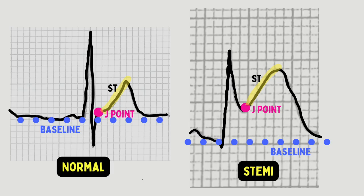First, let's very quickly go over identifying the ST segment. It is the area between the S wave and the T wave, hence the term ST segment. The point where it begins is known as the J point.